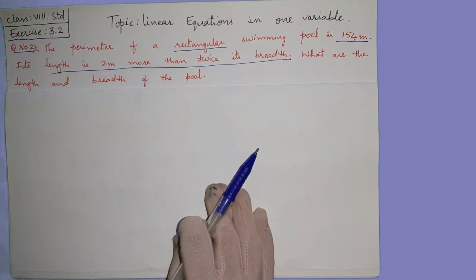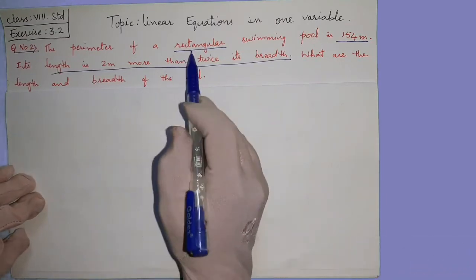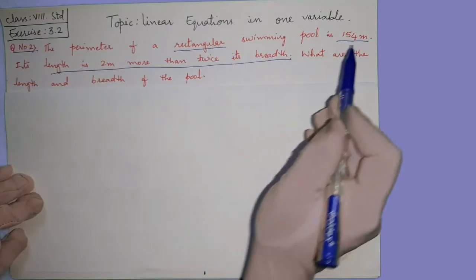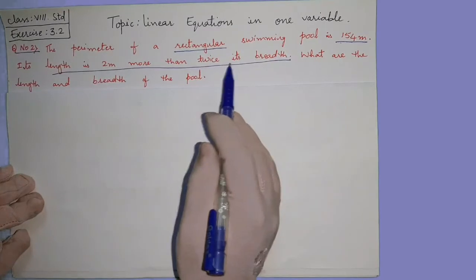Hello everyone, now the linear equations in one variable exercise 3.2 question number 2. The perimeter of a rectangular swimming pool is 154 meters. Its length is 2 meters more than twice its breadth.